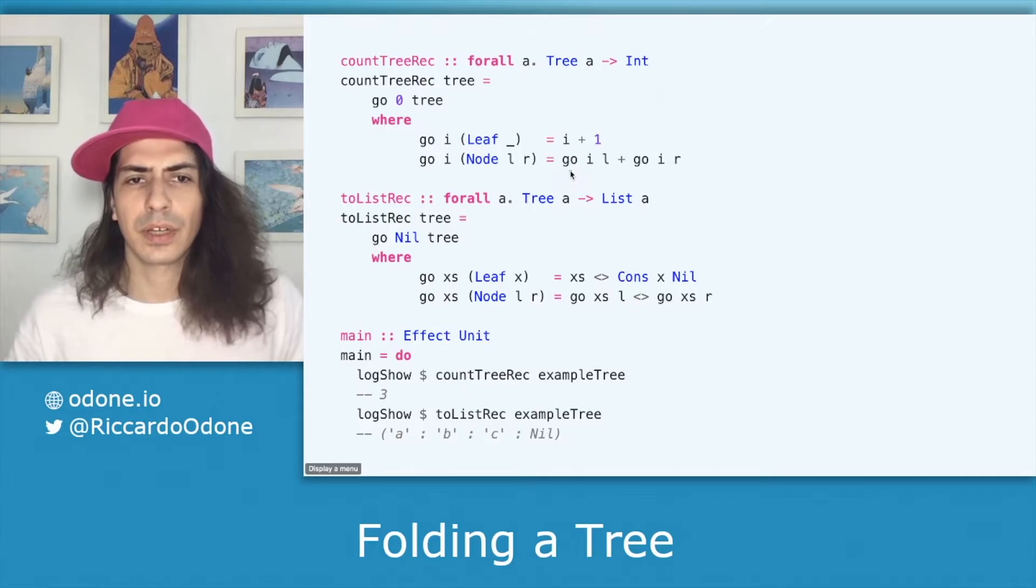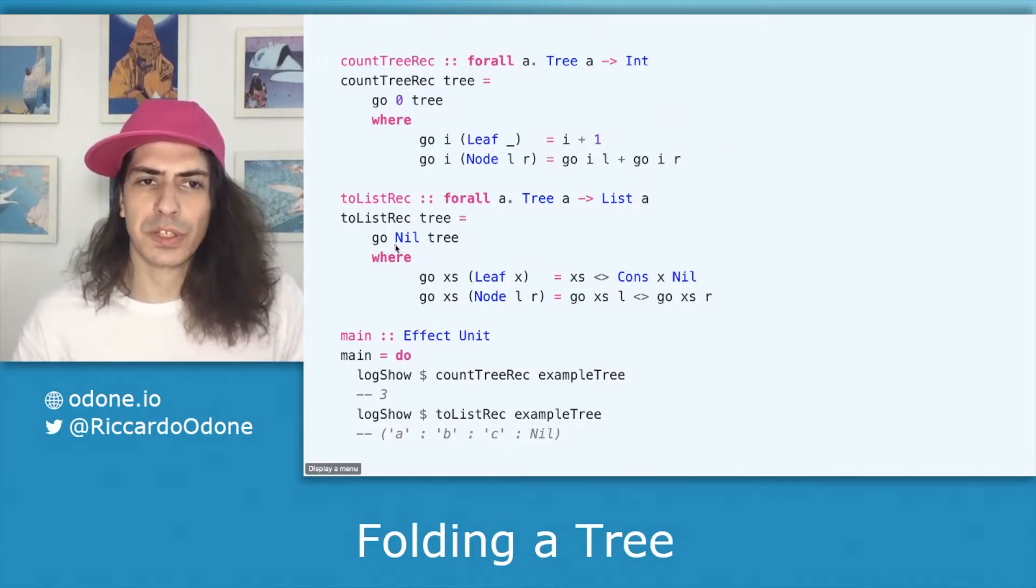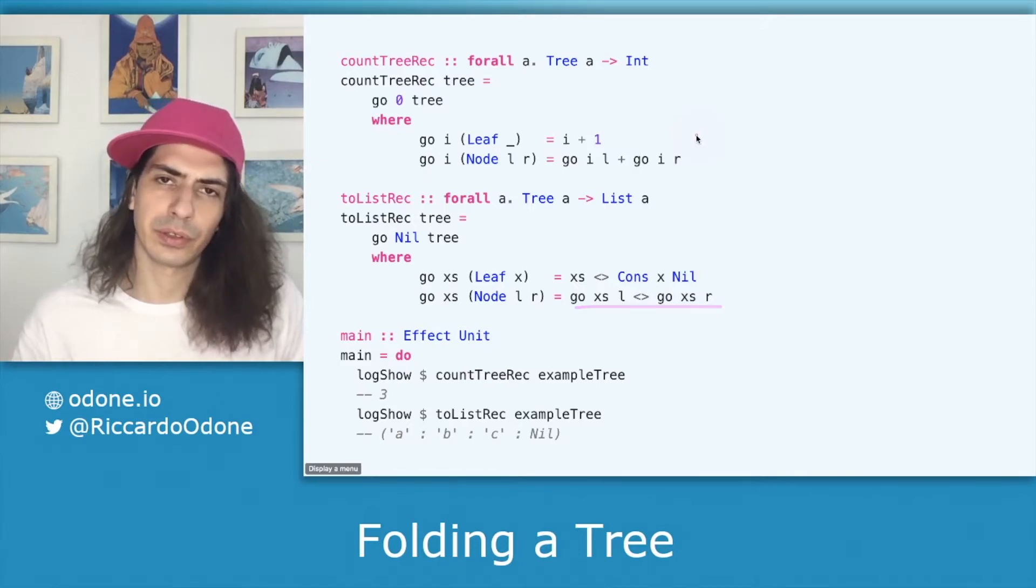In the case of transforming the tree into a list, in this case of characters, we do a similar thing which is we start with an empty list and then when we are in a leaf we add to that list the character in that leaf or in the recursive case we descend either on the left or the right tree.